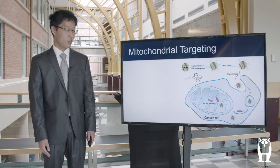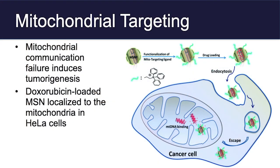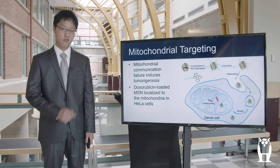In addition, we also have the mitochondria. The mitochondria is important because if communication fails between the mitochondria and other organelles in the cell, there can be the onset of tumorigenesis. Here in this study, we see another formulation of nanoparticles — mesoporous silica nanoparticles loaded with doxorubicin, which is a common chemotherapeutic treatment. As you can see, they are successfully endocytosed and specifically target the mitochondria and the DNA associated with it.